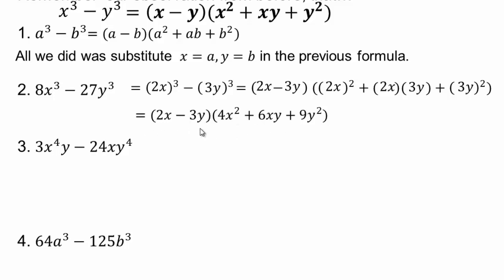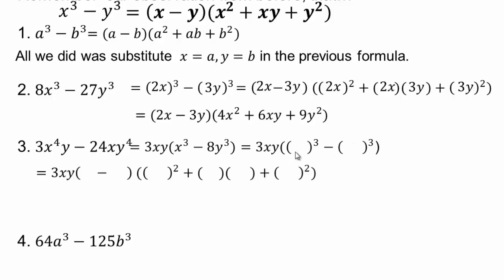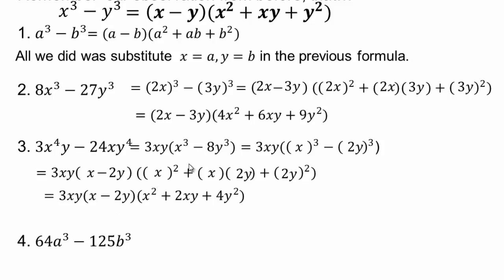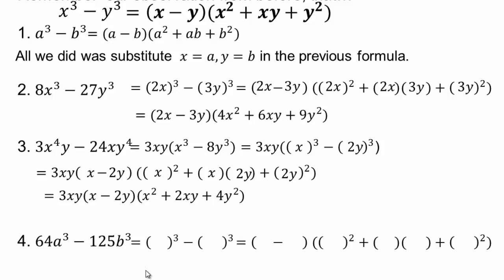Try the next one. Factor out the greatest common factor first — that's always your first step. Then it's a difference of cubes: the cube root of x³ is x, which goes in all first-term positions. The cube root of 8 is 2, so 2y goes in all second-term positions. Simplify: x², 2xy, 4y² (since 2² = 4). Then x × x² = x³ and −2y × 4y² = −8y³. The middle term is the product of x and 2y, and if that's a minus then this is a plus.